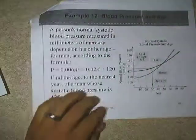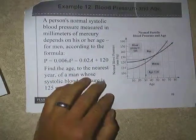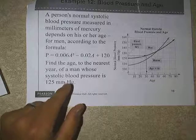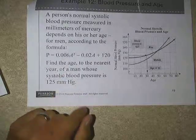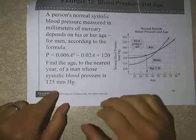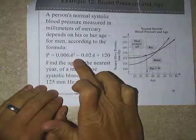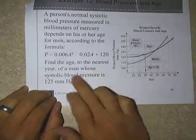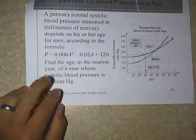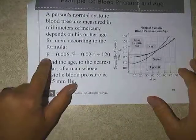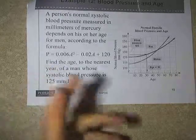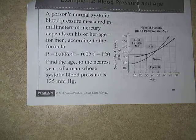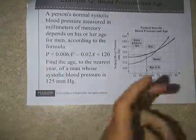All right. Questions on that one? All right. One other thing I wanted to talk about here is that a lot of things that are in real life lead us to quadratic equations, like in this particular case, we have this blood pressure relative to age. And this is a one for men. There's one for women here. You can see the graphs for men and women. So it says find the age to the nearest year where a man would have a blood pressure of 125. So if we put 125 in here, you'll notice that we have a quadratic equation to solve.